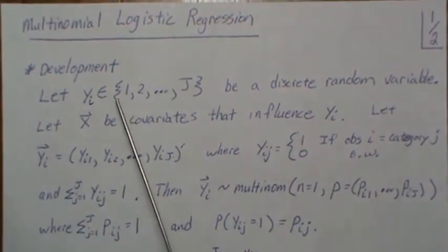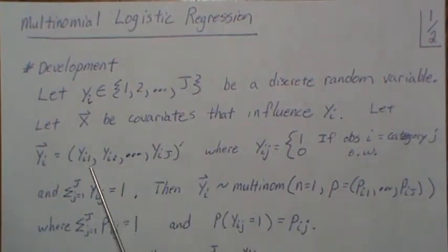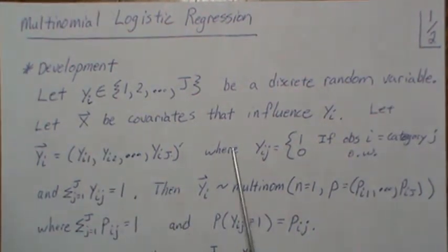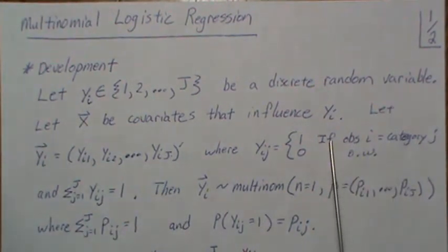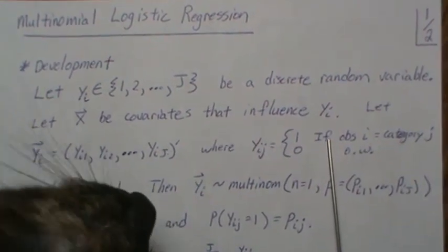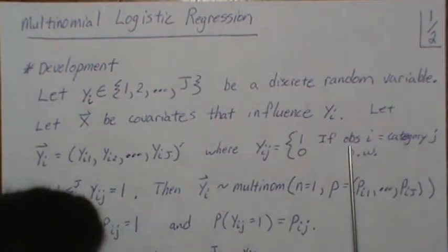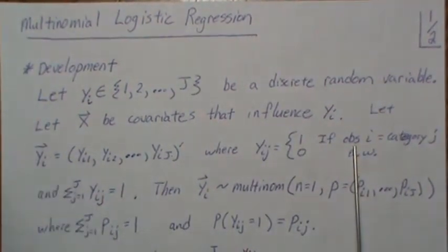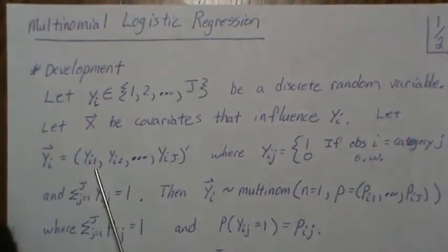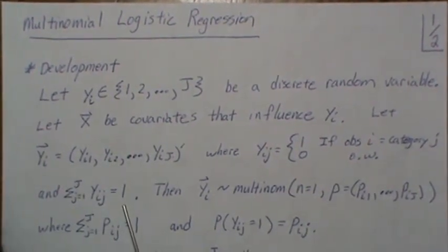So really, for each observation we create J indicator variables, and these are all one or zero depending upon what category was picked. The sum of these variables is one, right, because only one of them is one and the rest are zero, so they sum to one.